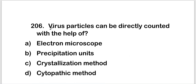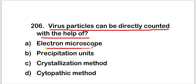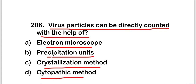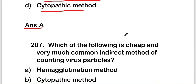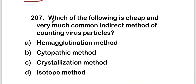The next question is: virus particles can be directly counted with the help of — electron microscope, precipitation unit, crystallization method, or cytopathic method. The right answer is option A, that is electron microscope. Viral particles can be directly counted with the help of an electron microscope.